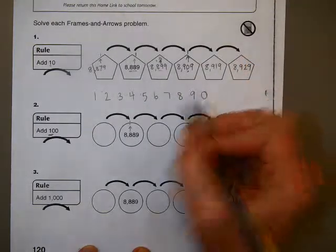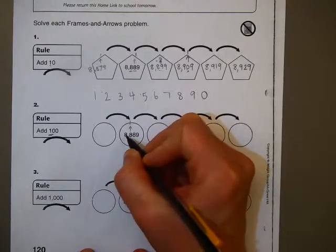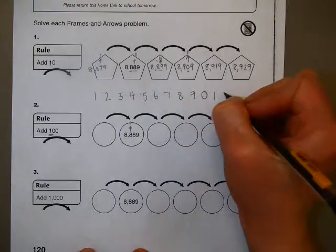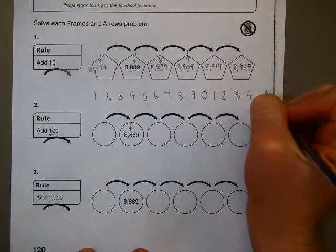And when we go to zero, we also have to change the next number to the left. And in this case, it would be the thousands place. And then we start again. One, two, three, four, and so on.